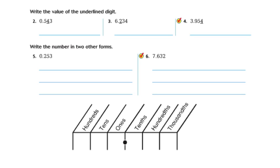All right, now getting to the book work. The first part of our book work is being able to write the value of the underlined digit. To find the value of the underlined digit, you name the digit — so that's a 4. And then you just name the place value. So this is the ones place.